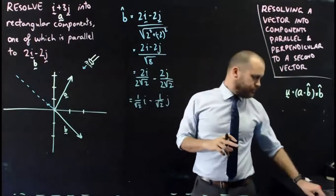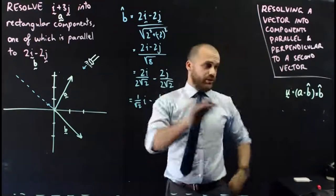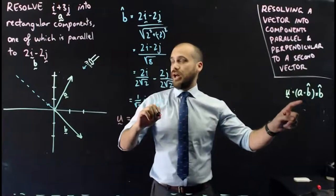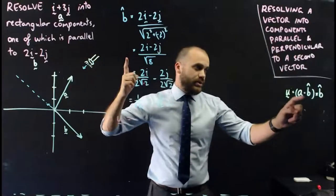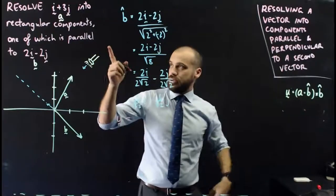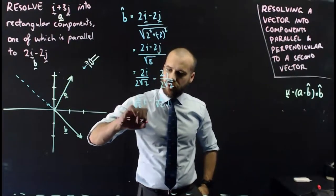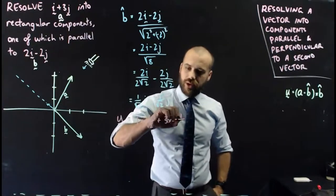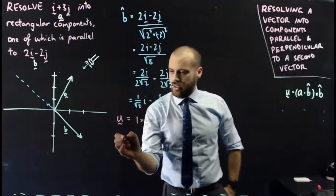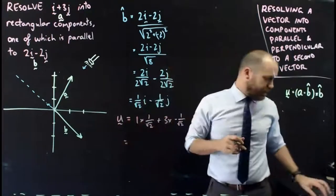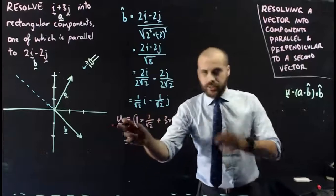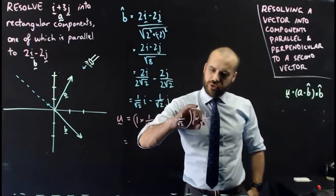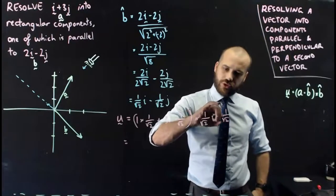So now that I have that, I can do my whole vector projection here. So it's going to be the dot product of a dot unit vector b. So it's going to be 1 times 1 over root 2 plus 3 times negative 1 over root 2. And then I can calculate that. I'm doing the vector itself, so I need to multiply it by the unit vector then. And the unit vector is 1 over root 2 i minus 1 over root 2 j.